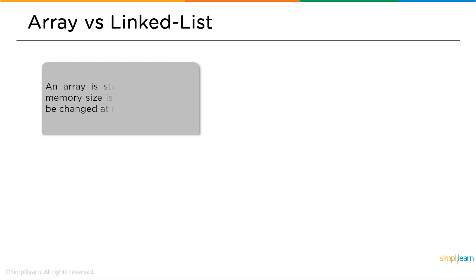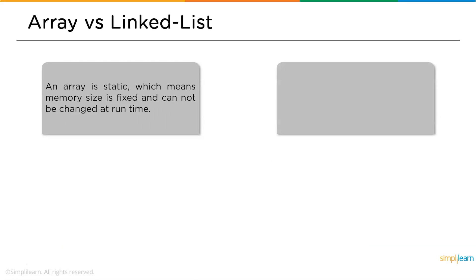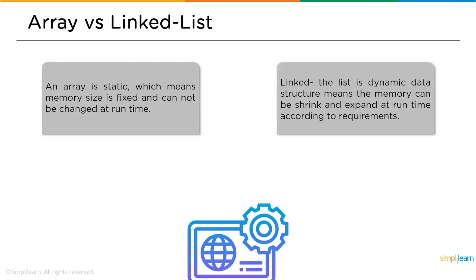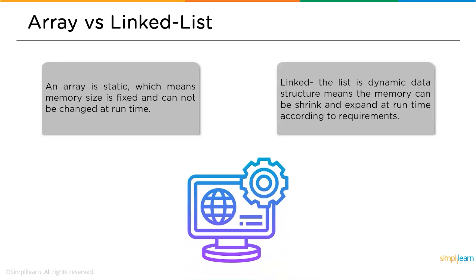The second difference is that an array is static, meaning its memory size is fixed and cannot be changed at runtime. Whereas in a linked list, the memory is dynamic — you can either shrink or expand the memory at runtime according to your requirements.